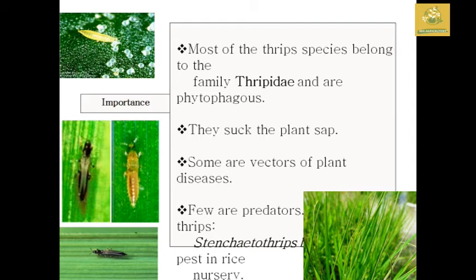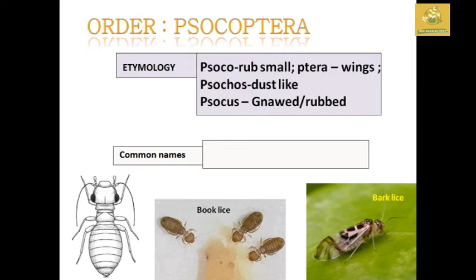The next order is Psocoptera. Etymologically, 'psoco' means to rub or grind — referring to their small, dust-like or rub-like nature. They are commonly called booklice, barklice, or dustlice.